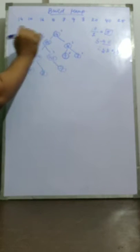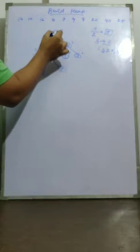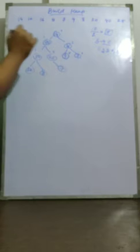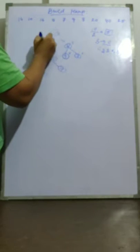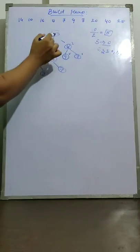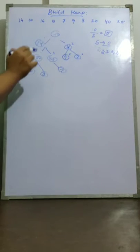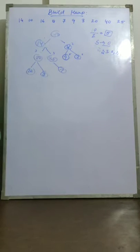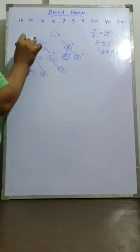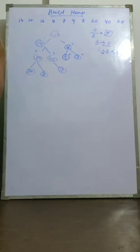Now I reach index 0. I have 14 with children 16 and 40. I swap 14 with the maximum child, which is 40. After the swap, 14 moves down. But now 14 is not greater than 25 in the subtree, so I also swap 25 and 14.